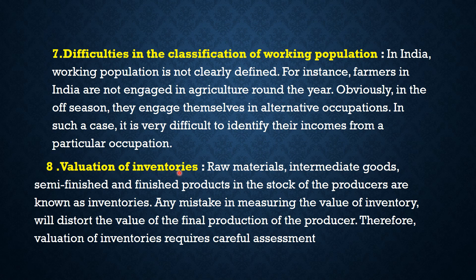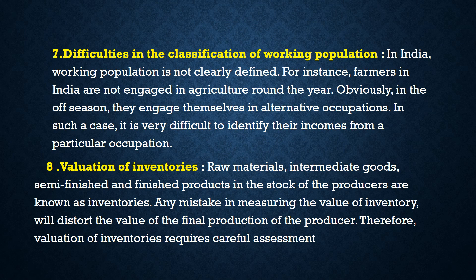Number 8: valuation of inventories. Raw materials, intermediate goods, semi-finished goods, and finished products in the stock of the producer are known as inventories. Any mistake in measuring the value of inventories will distort the value of final products. Therefore, valuation of inventories requires careful assessment. There are many difficulties in measuring the national income, but our central statistical organization faces all these problems and measures national income every year. Thank you.